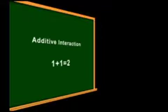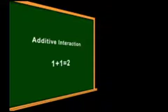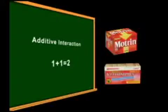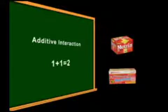Three types of drug interactions can be expressed as mathematical formulas. An additive interaction can be expressed as 1 plus 1 equals 2. When two drugs with similar actions are given together — for example, an NSAID and acetaminophen — they will each provide their usual level of effect, in this case analgesia. So they can be combined to be effective at lower doses of each drug, reducing possible adverse effects.